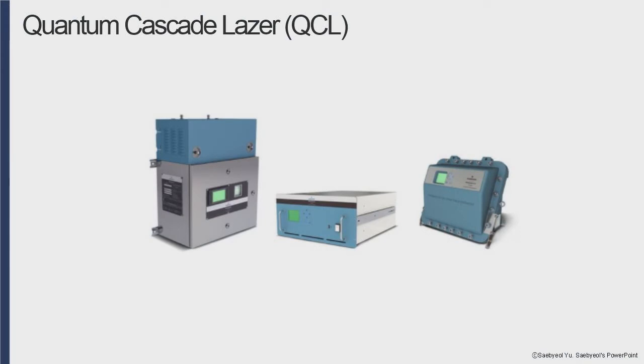Quantum cascade laser is a semiconductor laser in the mid-infrared band with a different operating principle from the PN junction type semiconductor laser diode. Quantum cascade laser is in the spotlight because it is the only semiconductor laser in the IR band that can operate at room temperature. And it is a key device that drives the entire IR region, which has a lot of room for exploration compared to the visible region.